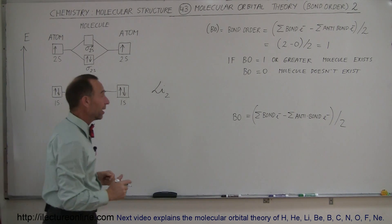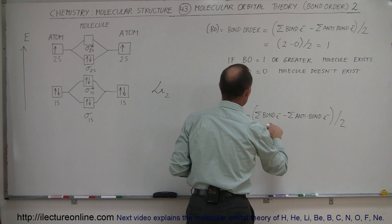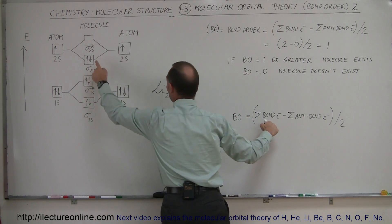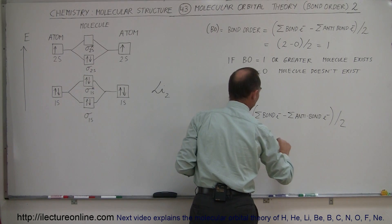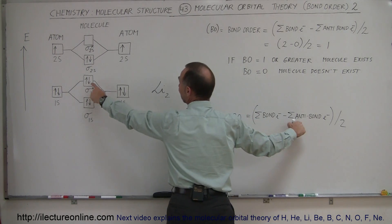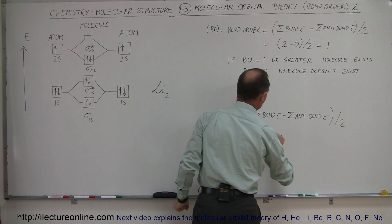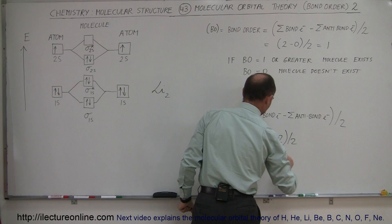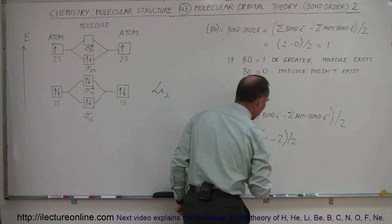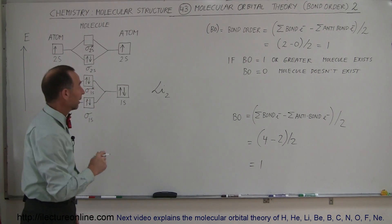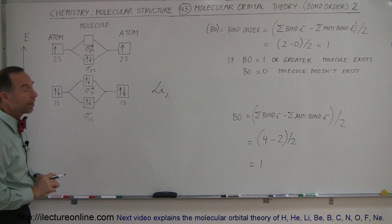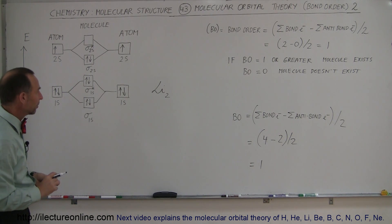So let's calculate this out. In this case, the bond order is going to be the number of electrons, which is 4, which are involved in the bonding, minus the number of electrons which are involved in the anti-bonding right there, and we divide that by 2. So in this case, that is equal to a 1, and therefore yes, lithium like that in a diatomic molecule does exist, a lithium molecule like that.